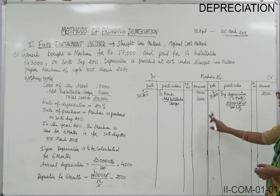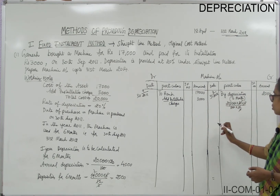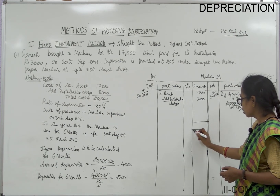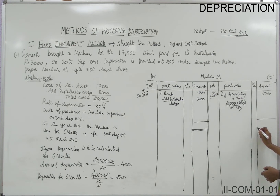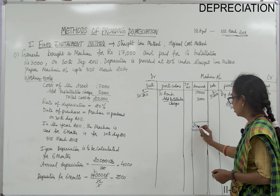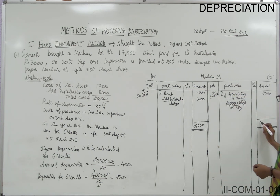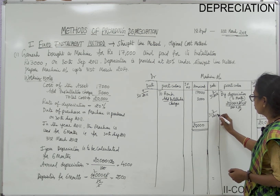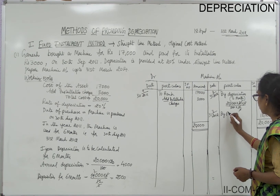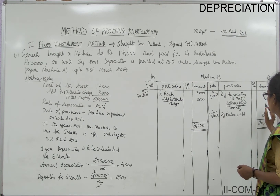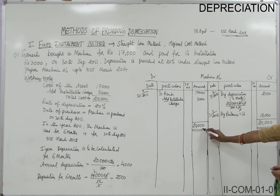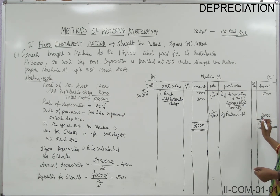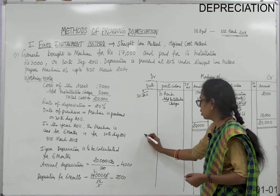On the debit side, the total is Rs. 20,000. On the credit side, depreciation is 2,000 and the balance carried down is 18,000, as on 31st March 2012. You have taken total cost of 20,000, deducted depreciation 2,000, and the closing balance for this year is Rs. 18,000 for this machine.